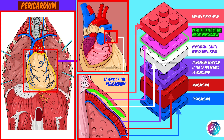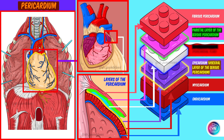We also have the visceral layer of the serous pericardium. Between the parietal layer and the visceral layer of the serous pericardium, we place a white piece of LEGO. This layer represents a virtual cavity known as the pericardial cavity. A virtual space means that, in normal conditions, it does not exist, since the two layers of the serous pericardium are united, and there is only a small amount of pericardial fluid between them. However, in a pathological situation, blood or pus can accumulate between the two layers, causing them to separate and form a real cavity.